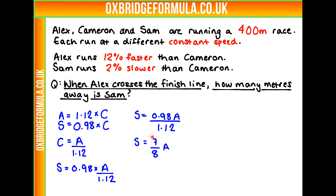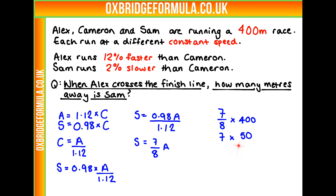This is also going to relate to the distance they both run. If they're running at a constant speed, the difference in their speeds is going to be the difference in their distances too. So the distance that Sam runs is also 7 eighths of the distance that Alex runs. Since the race is 400m, Alex runs 400m, so we get 7 eighths times 400. Dividing by 8 first gives us 7 times 50, which equals 350.